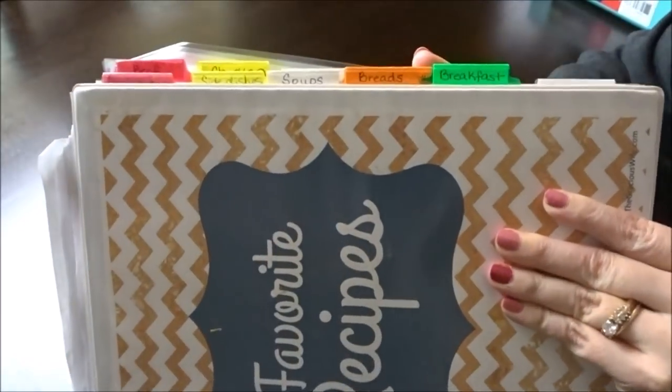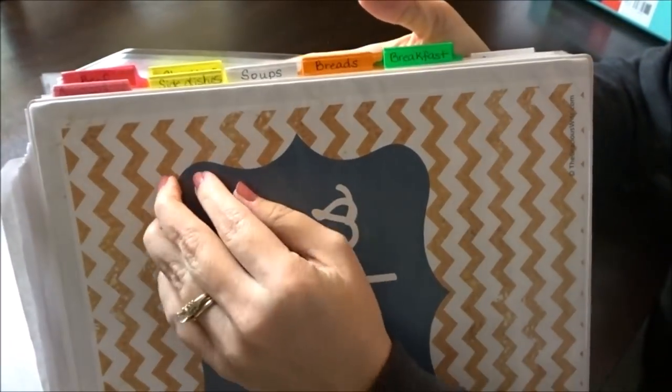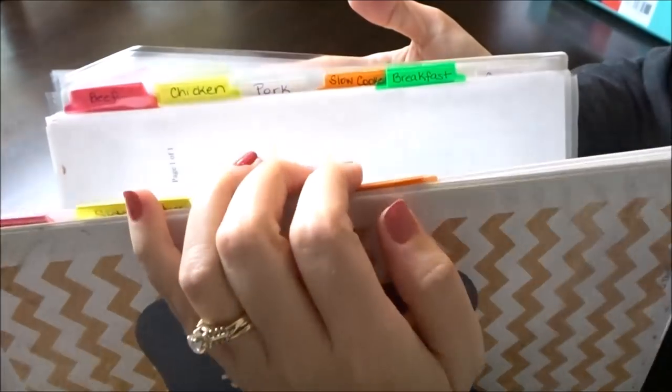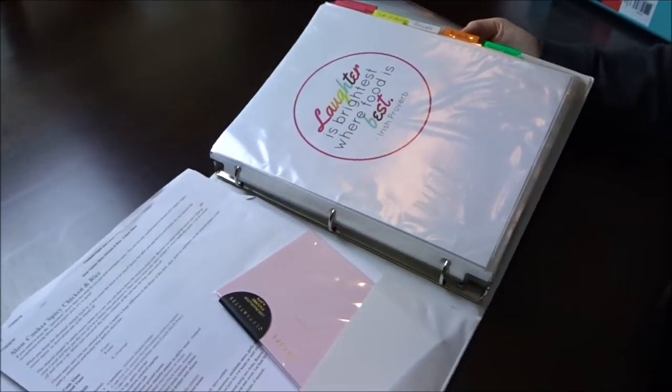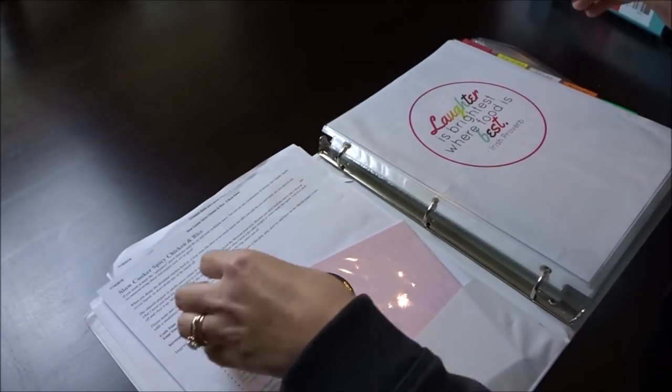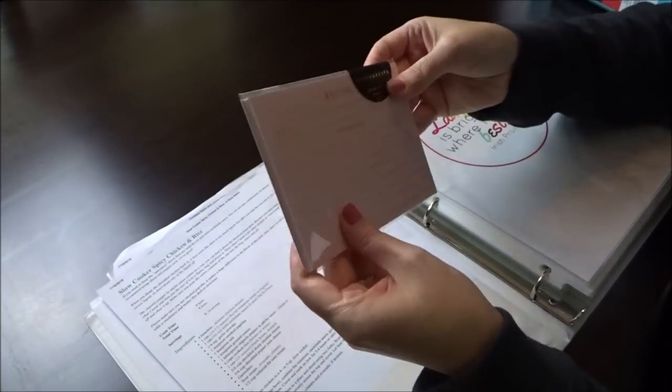I had a couple of problems with this binder. It wasn't quite thick enough at only one inch and I had way too many sections. Sometimes a recipe would fall into one of two sections, so a lot of times I couldn't find it. So I'm going to pare that down today.